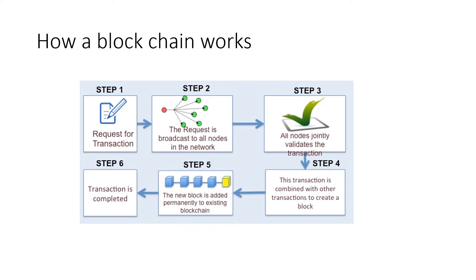Whatever request has been made by Alice is broadcasted to all the members in the network. The nodes in the network might be mobiles, laptops, or computers. Whatever request Alice made is broadcasted to all the peers in the network. Then all the nodes start mining on this transaction.